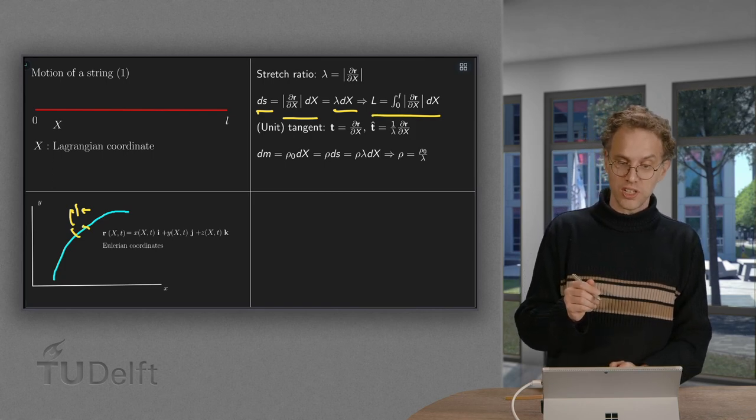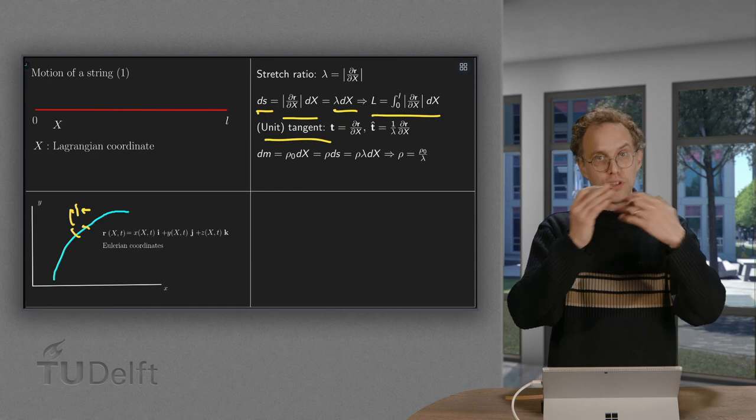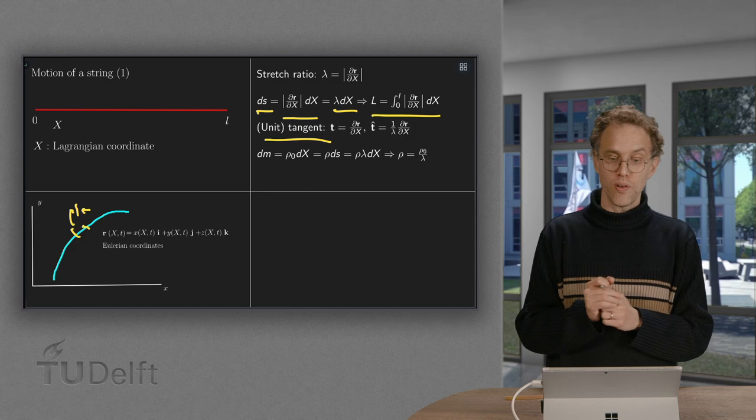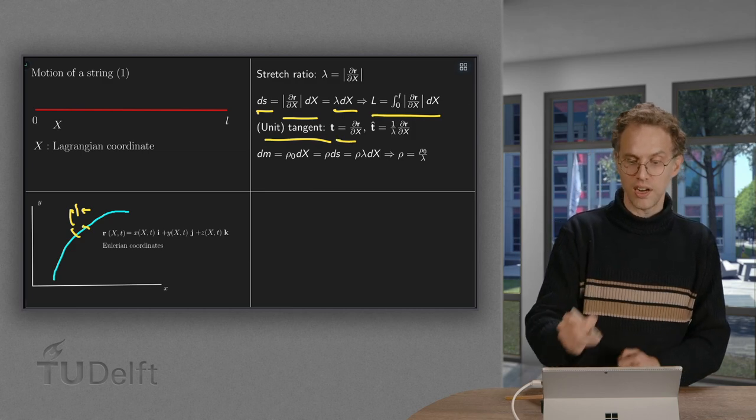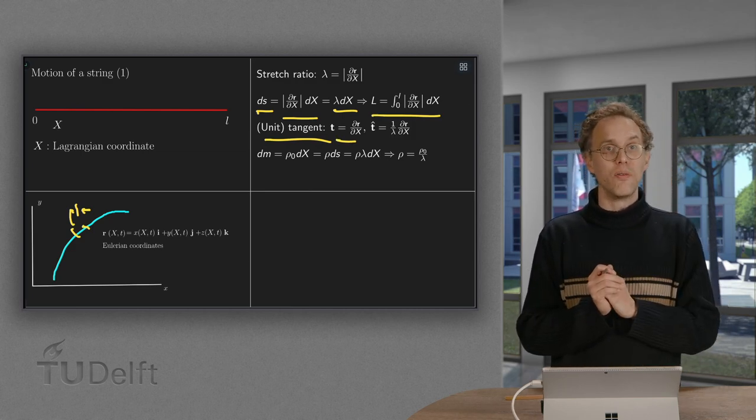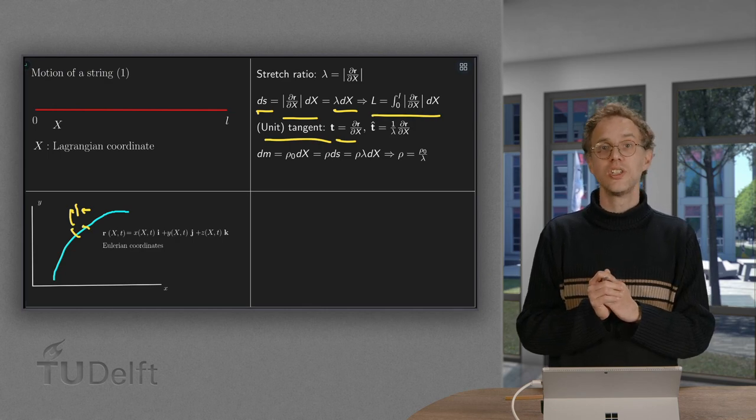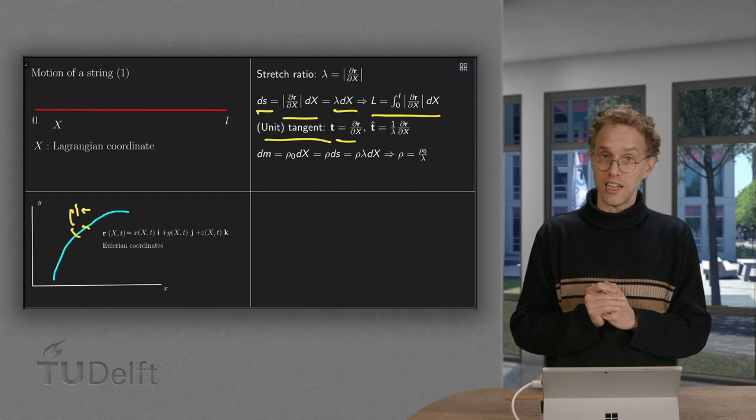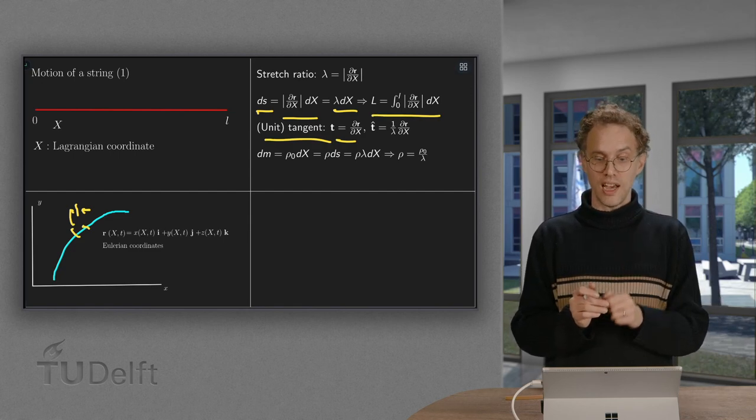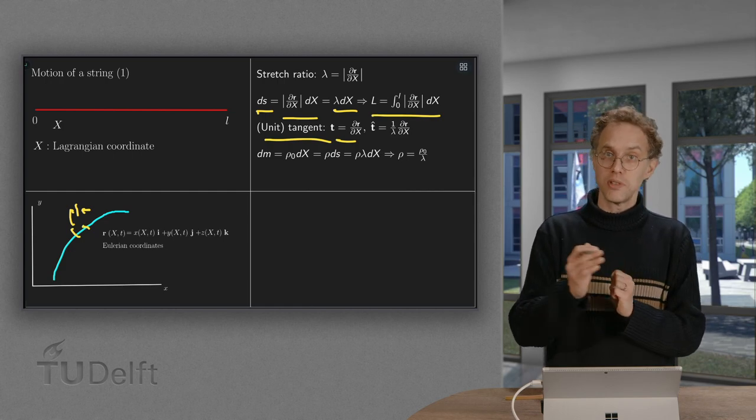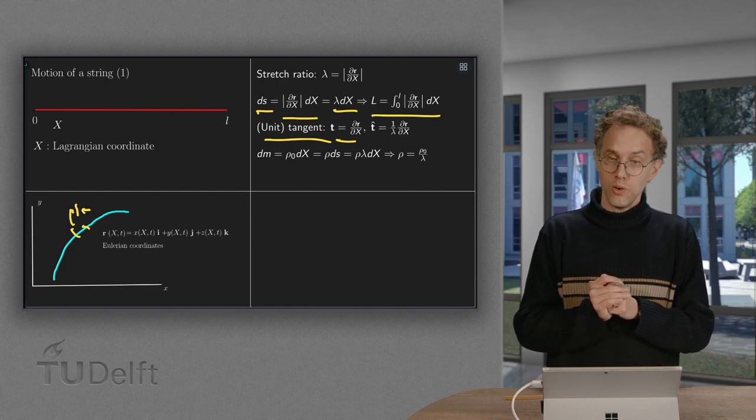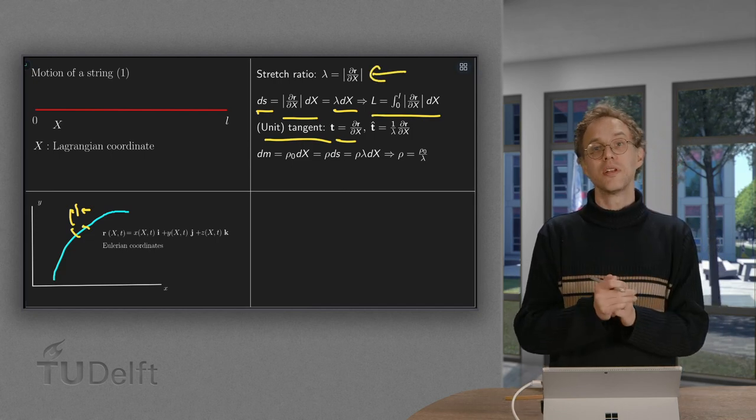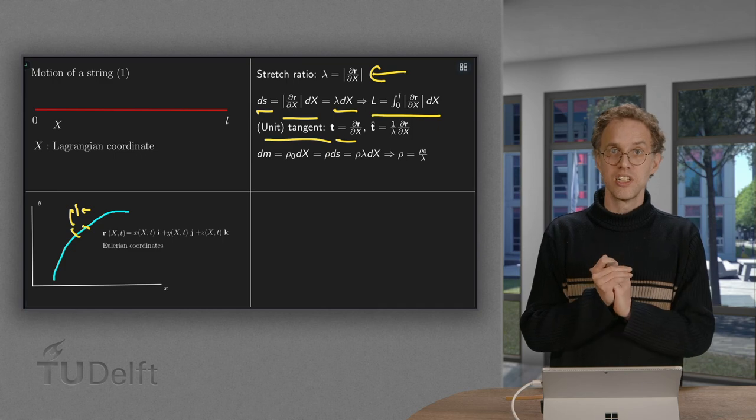Second important quantity is the unit tangent. So if you have some parametric curve r of x and t, then you can compute the tangent always as t equals dr/dx. And now we often need to use the unit tangent. So how do we find the unit tangent? We have to divide dr/dx by its length. So t hat equals 1 over the norm of dr/dx times dr/dx. But this norm of dr/dx was called lambda. So our t hat equals 1 over lambda times dr/dx. Our second important player.